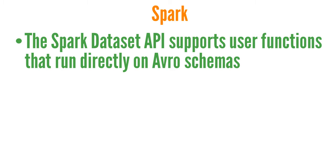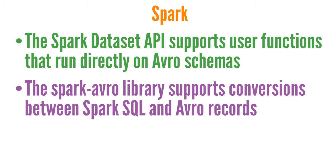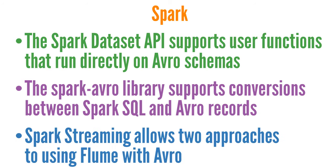In my example coming up, I'm going to use MapReduce, but here are a few notes about Avro and Spark. The Spark dataset API supports user functions that run directly on Avro schemas. The Spark Avro library supports conversions between Spark SQL and Avro records, making Avro a first-class citizen in Spark, as it supports reading and writing of Avro data from Spark SQL. Spark Streaming allows two approaches to using Flume with Avro: the first is an Avro push-based in-memory approach, whereas the second, still based on Avro, is a pull-based system using a custom Spark Sync library.